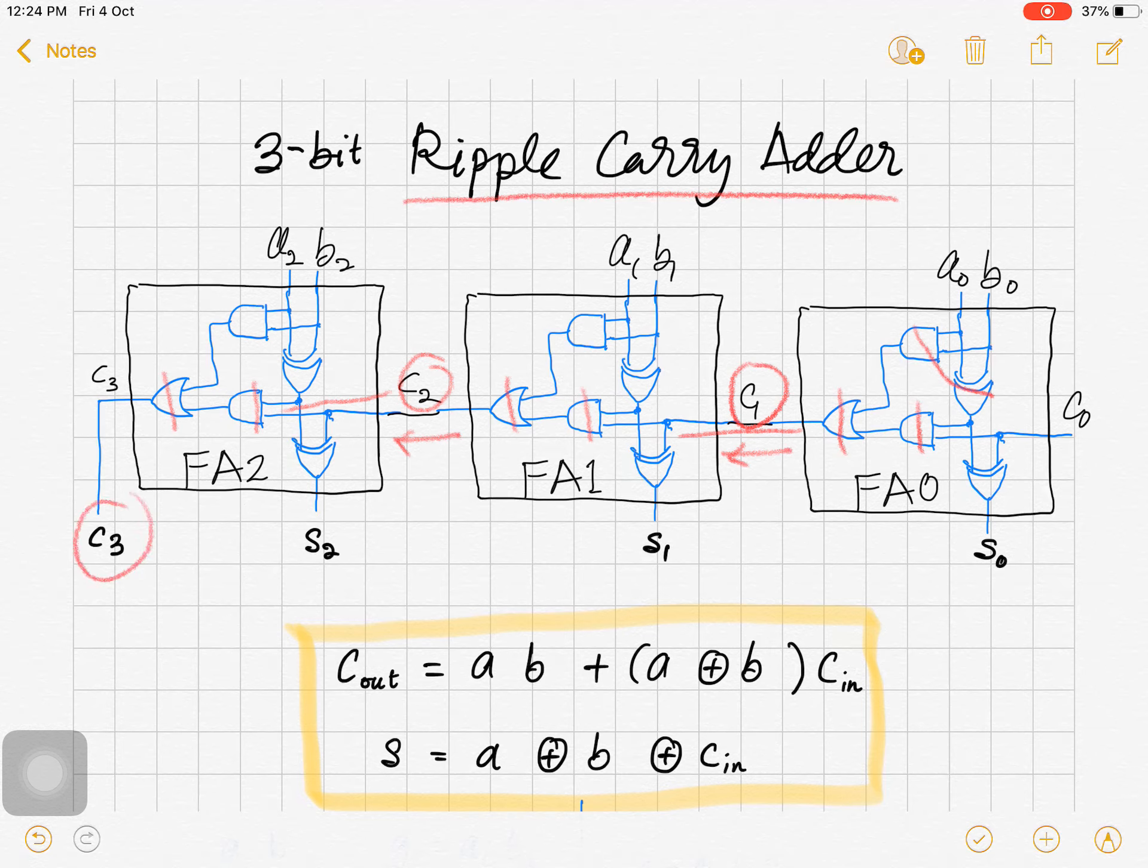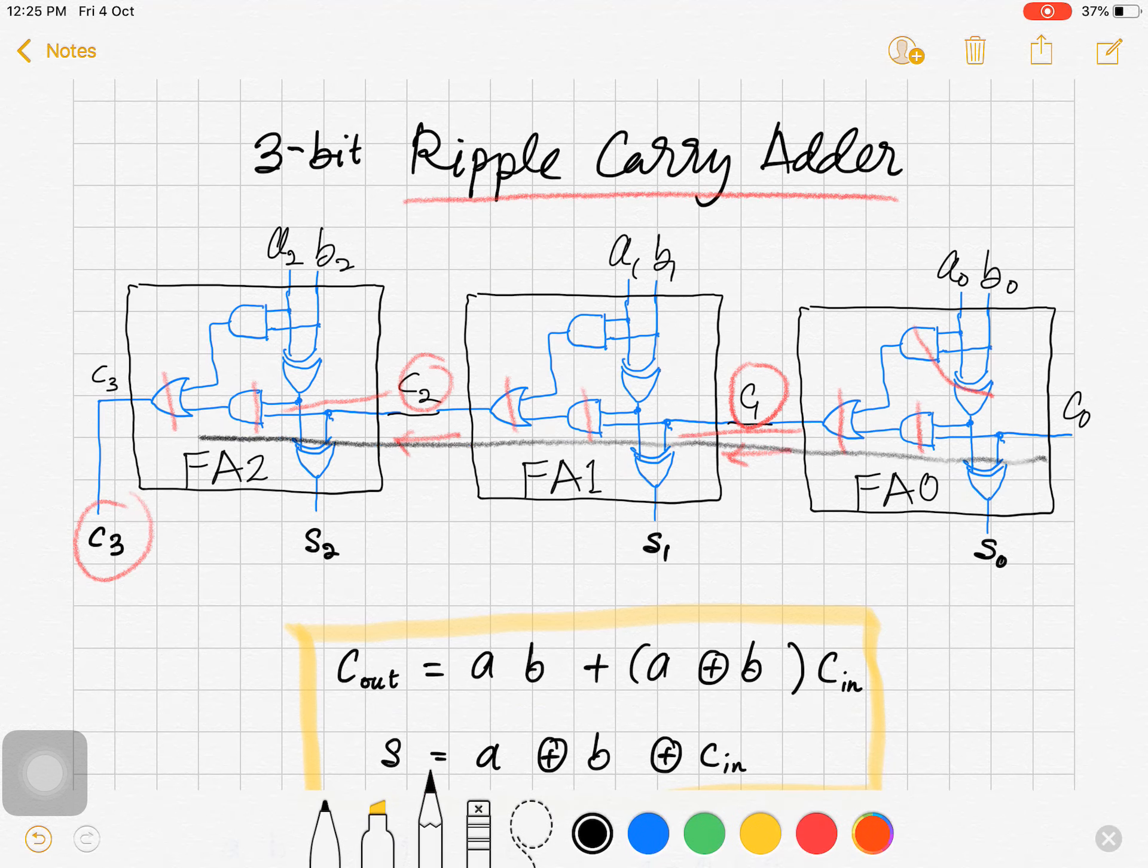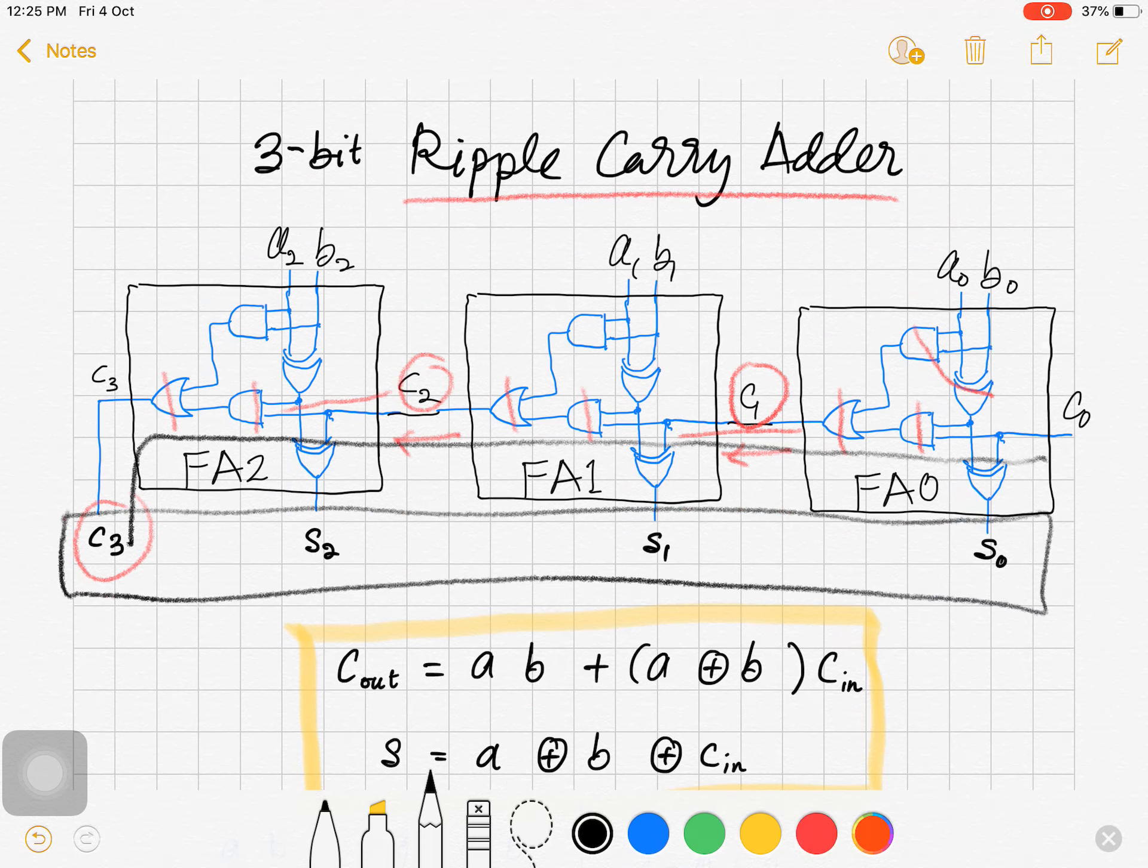So this is the problem with ripple carry adder. Due to the long path to produce the carry out in the final stage, ripple carry adder has a relatively large delay that may cause slow response for getting the results. By the way, there is an alternative adder circuit that can dramatically reduce the time to perform addition.